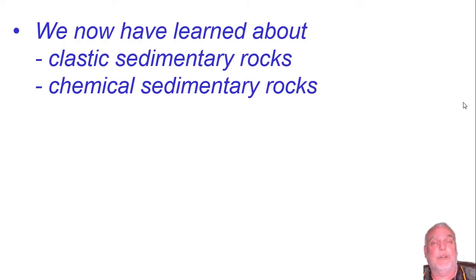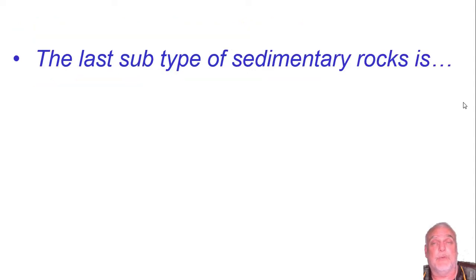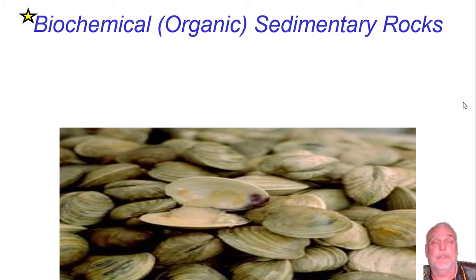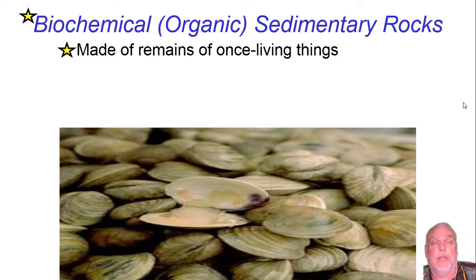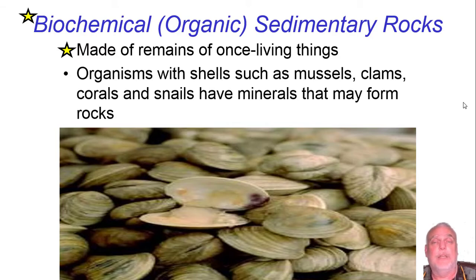We've now learned about clastic sedimentary rocks and chemical sedimentary rocks. Now it's time for our third subtype: biochemical, sometimes called organic, sedimentary rocks. These are made from the remains of once-living things like old shells and little hard-shelled critters. Organisms with shells such as mussels, clams, corals, and snails have minerals that may form rocks.